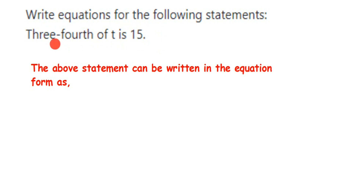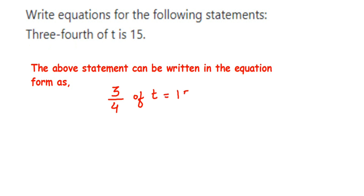We know 3/4 means 3 by 4. So the above statement can be written in equation form as: '3/4 of t is equal to 15.' Now, 'of' means multiplication, so 3/4 multiplied by t is equal to 15.